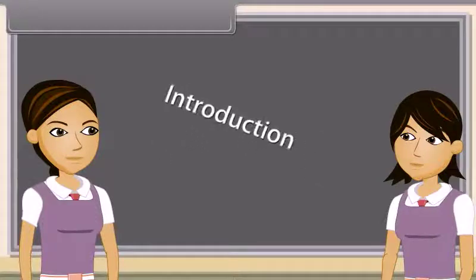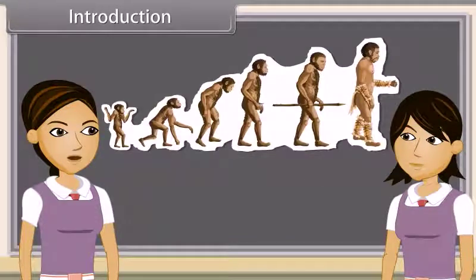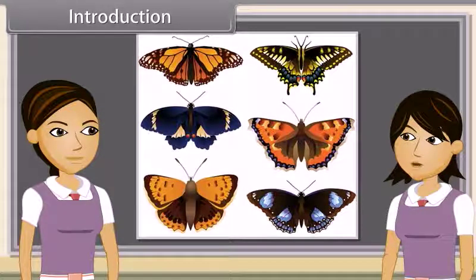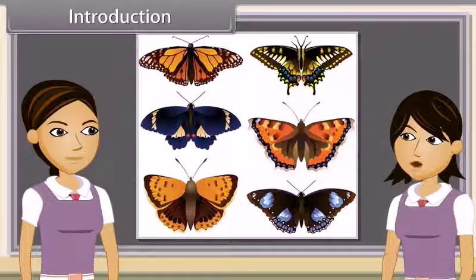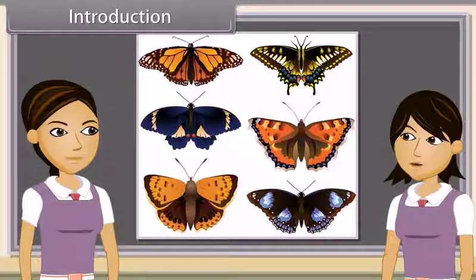Introduction: Evolution is any change across successive generations in the heritable characteristics of biological populations. Variations are the structural, functional, or behavioral changes from the normal characters developed in living organisms.